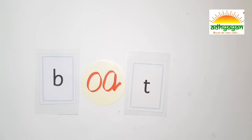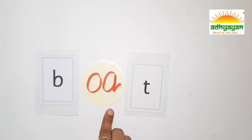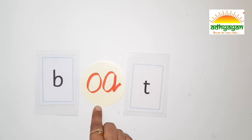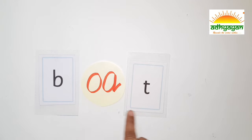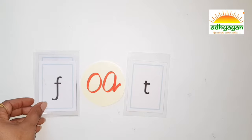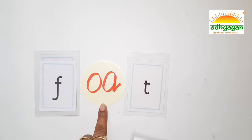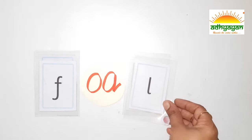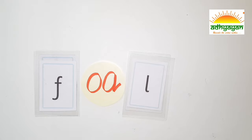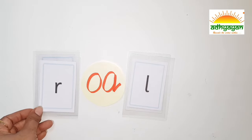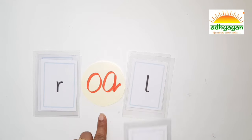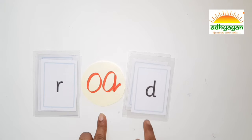Next long vowel is O — OE says O. And the word is B-O-A-T — Boat. Next is F-O-A-L — Foal. Next word is R-O-A-D — Road.